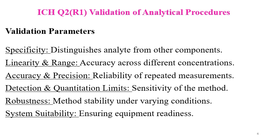Specificity distinguishes the analyte from other compounds — it confirms the method can identify the analyte from other components. Linearity and range refers to accuracy across different concentrations. Accuracy and precision involves the reliability of repeated measurements. Detection and quantitation limits relate to the sensitivity of the method. Robustness refers to method stability under varying conditions. System suitability ensures equipment readiness.